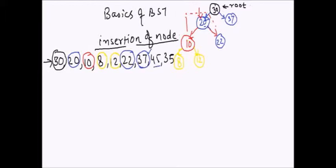Now another node comes: 45. Is 45 greater than 30? Yes. But since the right child is already occupied, we can't place it there. So we move down to 37. Is 45 greater than 37? Yes, and the right child is null. So we add 45 as the right child of 37.